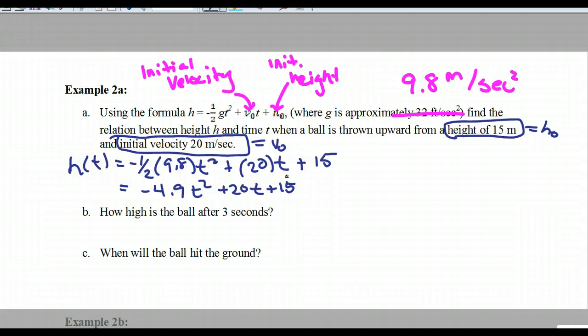Part b is asking how high is the ball after three seconds? So what do you guys get for that? You're just going to put 3 into the t. So it'll be h of 3 equals negative 4.9 times 3 squared plus 20 times 3 plus 15. What did you guys get for that? I had 30.9. So it went to a height of 30.9 meters.